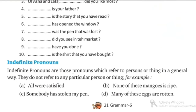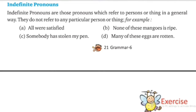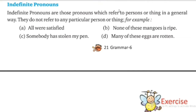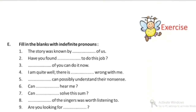Next is indefinite pronoun. What are indefinite pronouns? Indefinite pronouns are those pronouns which refer to a person or thing in a general way, not a particular person or thing. Like 'all were satisfied' — no particular person is mentioned. 'Somebody has stolen my bag' — we don't mention anybody specific, just somebody. It may be anyone. These are called indefinite pronouns.